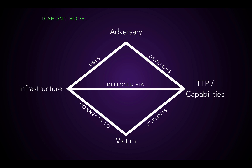So this is what it looks like. It's actually really simple looking, but it's kind of complex and difficult to actually use in practice. It has these four points: adversary, capabilities, victim, and infrastructure. What we're trying to do is understand what the threat was in our network and fill in these blanks.